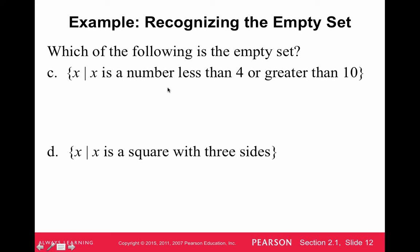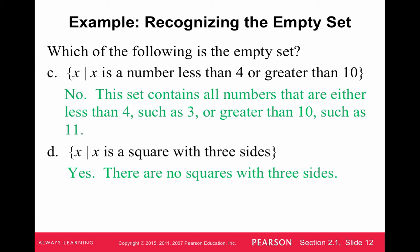Okay, here we go. This is C. We already went over. The number less than 4 or greater than 10 is an empty set. D, the set of elements where the element is a square with three sides. Well, that's impossible. Those are only triangles. So both of those are.